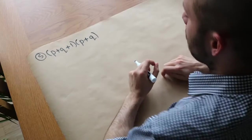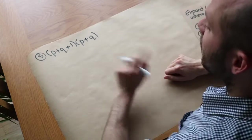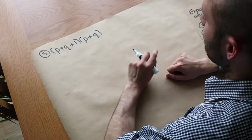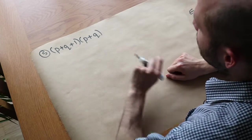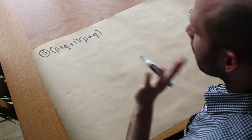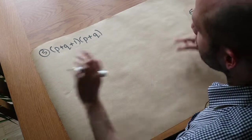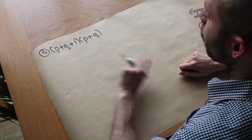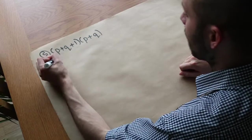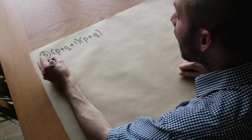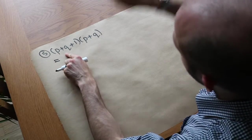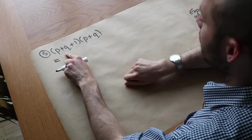Now let's go on to some harder ones. This is harder because we've actually got 3 terms in the first bracket. And if your teachers ever taught you something called FOIL, please forget it now, because it doesn't work when you have more than 2 things in one bracket. But exactly the same principle applies: we do each thing in the first bracket times each thing in the second.